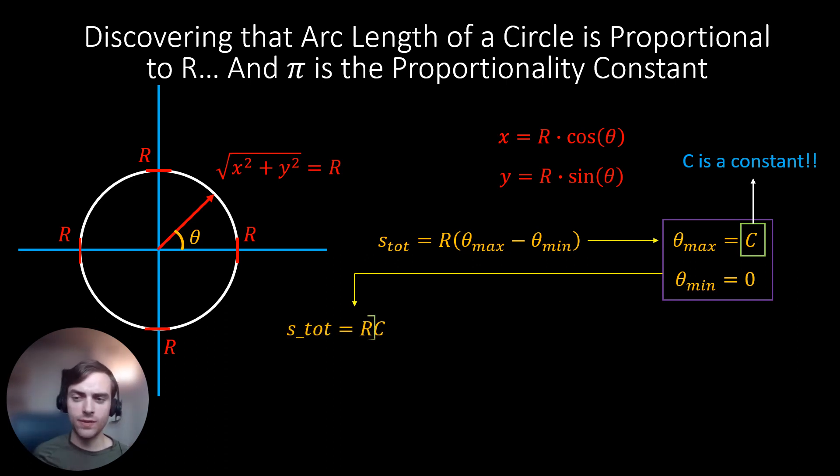We know that the radius of a circle, r, is half of the diameter of the circle. Thus s_tot is the diameter d multiplied by our constant c over 2. And c over 2 happens to be a very special constant. It is what we call pi. This constant that we call pi is actually the proportionality constant that we multiply the diameter by to obtain the circumference of the circle.